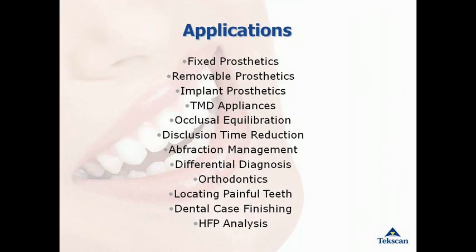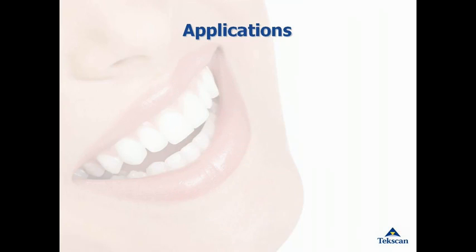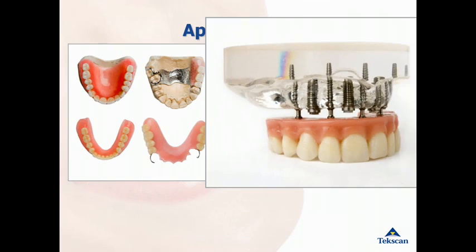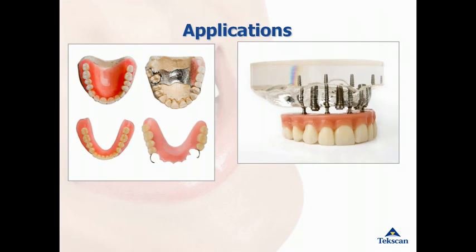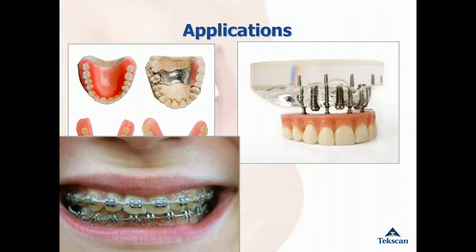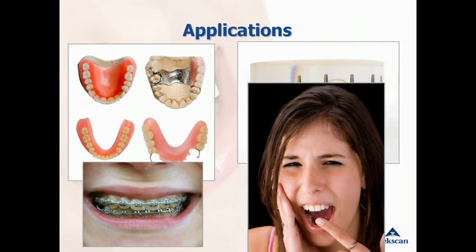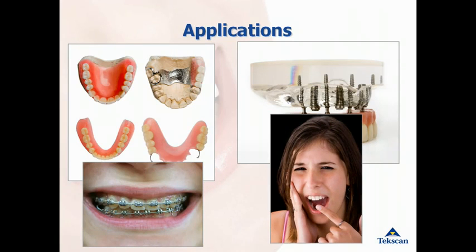There are many different dental applications for the T-Scan system which go beyond general occlusal equilibration. The T-Scan system is a valuable tool for removable prosthetics, implant time delay, balancing splints, orthodontics, and locating painful teeth. If you have a patient that has a painful tooth but they can't quite pinpoint where it is, the T-Scan can show rather easily whether it is occlusally related.